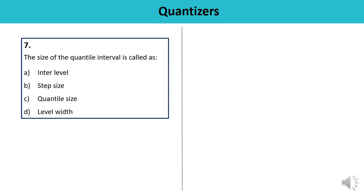Question 7: The size of a quantile interval is known as — interlevel, step size, quantile size, or level width? The interval between quantization levels is known as step size, which is denoted by delta. The answer is B.